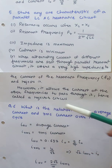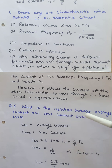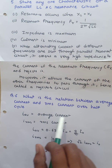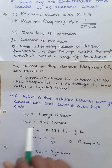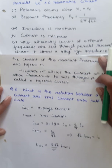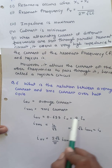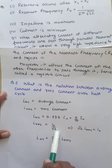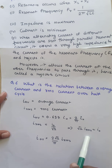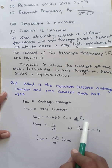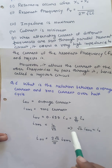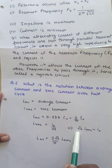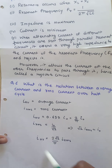The next question: what is the relation between average current and RMS current over a half cycle? Average current Iav equals 0.637 × I₀, which is (2/π) × I₀, and RMS current Irms equals I₀/√2, so I₀ equals √2 × Irms. Substituting, Iav equals (2/π) × √2 × Irms.